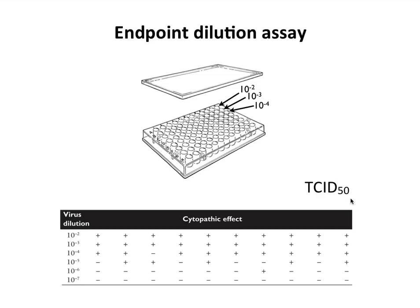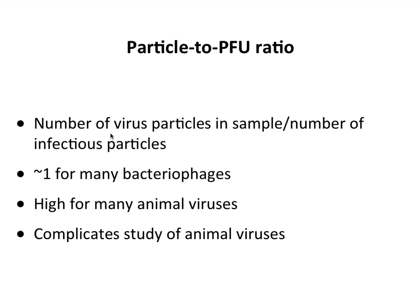We say this virus stock contains 10⁵ tissue culture infectious doses 50%, or TCID₅₀, allowing you to standardize virus stocks and compare them across experiments. In practice, the 50% endpoint rarely falls exactly on an integer dilution, so you use math to calculate the actual TCID₅₀, which often comes out to values like 10^5.5 or 10^6.5.